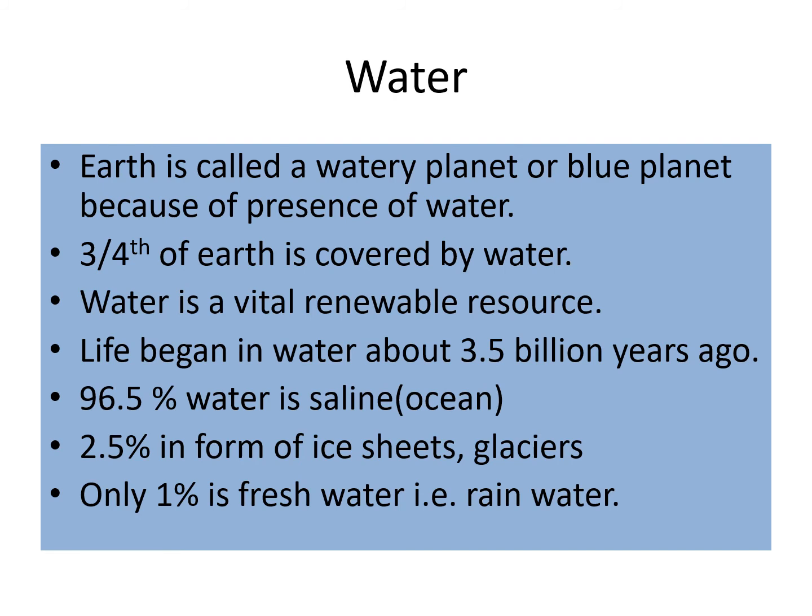Water is the most important natural resource as it is essential for survival of all living organisms on the surface of earth. Earth is called a watery planet because out of eight planets, only earth has water. It is also known as the blue planet because we represent water with blue color. Three-fourths of the earth is covered by water, but still there is water scarcity in some parts of the world, because 96.5% water present on earth's surface is saline — not useful for industries, agriculture or drinking. 2.5% is in the form of ice sheets and glaciers, and only 1% is fresh water, that is rainwater. Life began in water about 3.5 billion years ago.